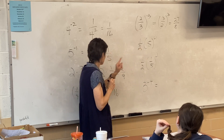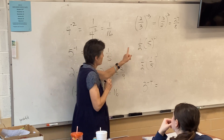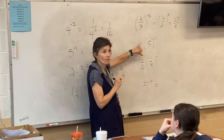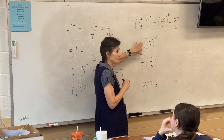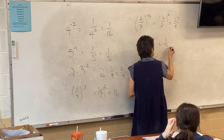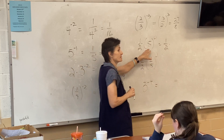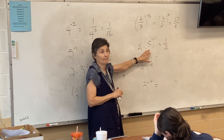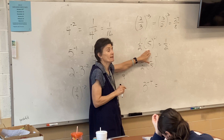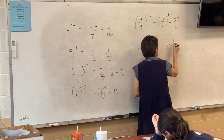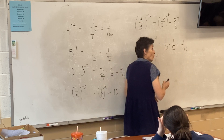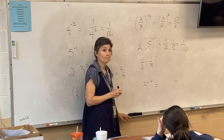This one's similar — that one-half does not even have an exponent, so I'm just going to keep the one-half. What happens to five to the negative first? One over five. Now I can multiply them and get one over ten.